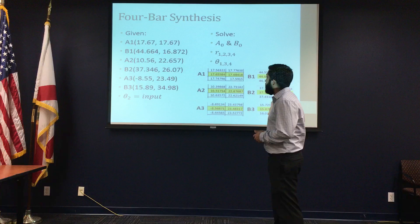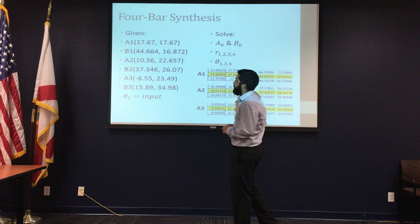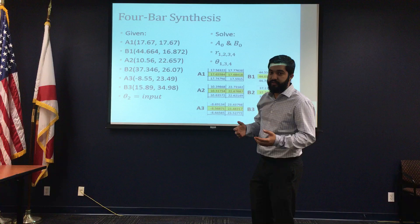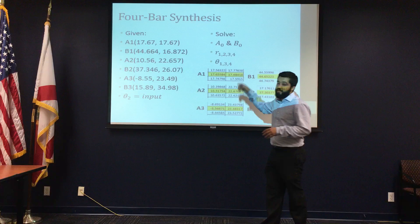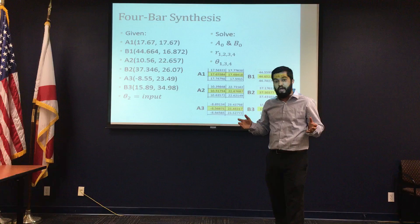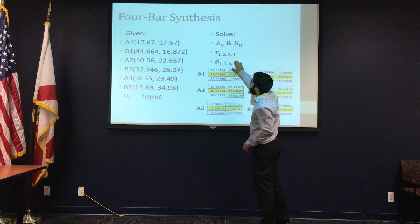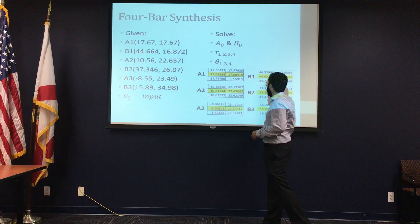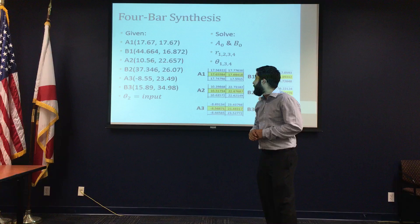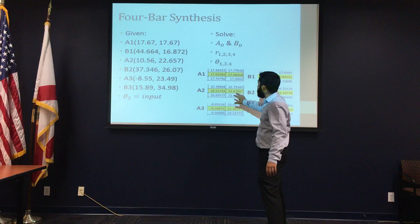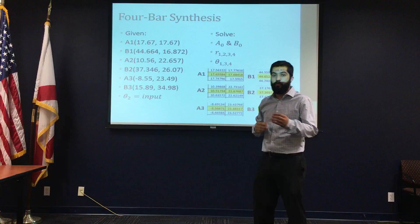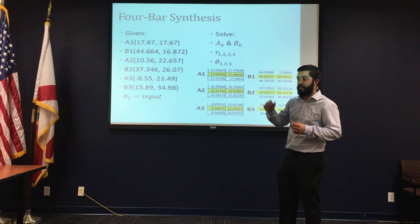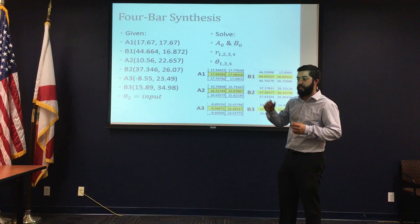For the four-bar synthesis, we were given three different positions for the coupler: A1, B1, A2, B2, A3, B3. We were given theta 2 as our input. The first thing we had to solve for was the actual anchor points of this four-bar system, using different equations plugged into Excel. Once we had all our equations and all our R's — the links R1, R2, R3, and R4 — we found the angles between them. Our system was verified to go through those specified points, completing the four-bar synthesis across 360 degrees of iterations in Excel.